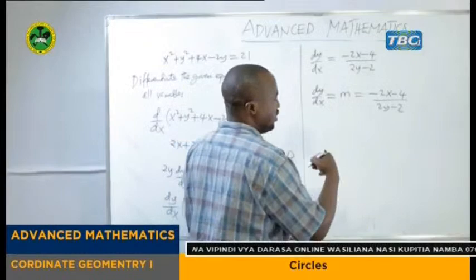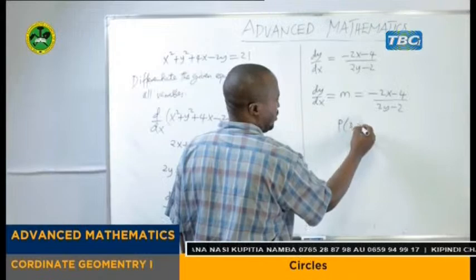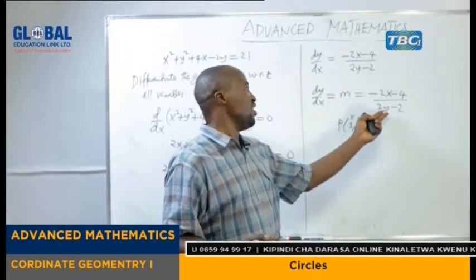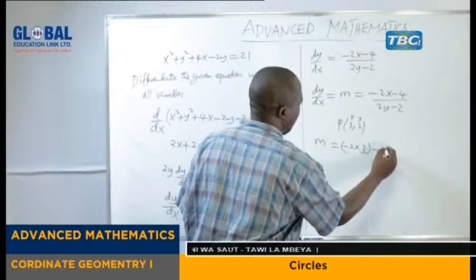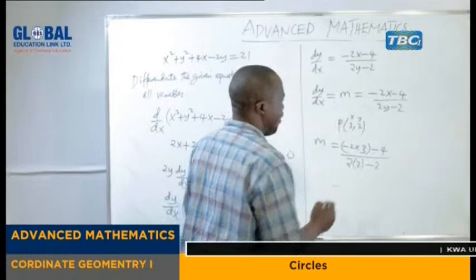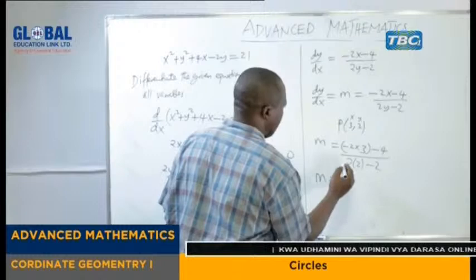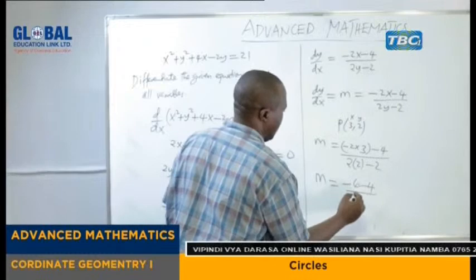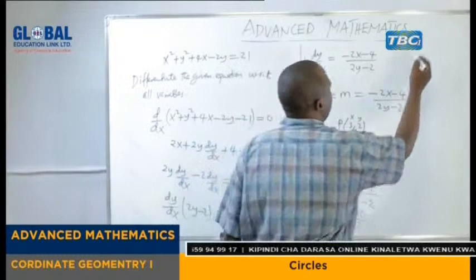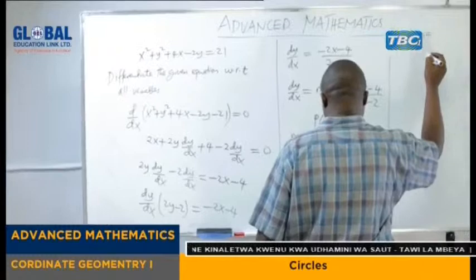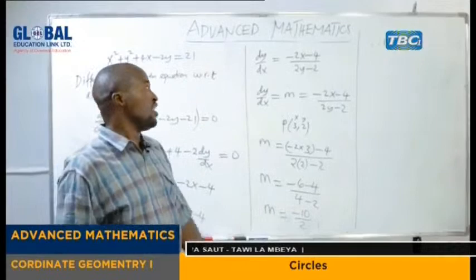Our coordinate is P(3, 2). So m equals (negative 2×3 minus 4) over (2×2 minus 2). So m equals (negative 6 minus 4) over (4 minus 2). So m equals negative 10 over 2. The slope of the line is equal to negative 5.